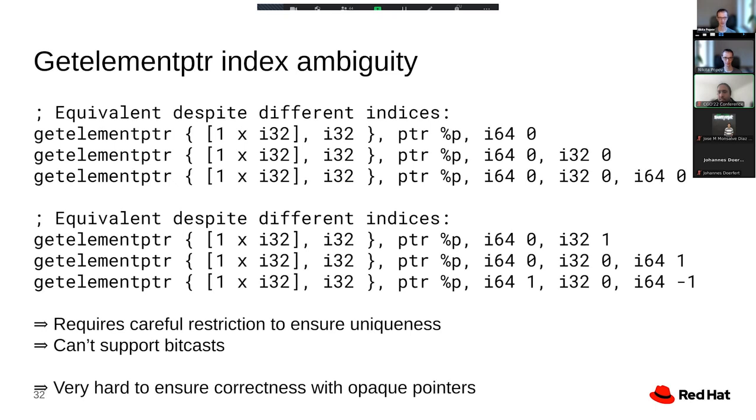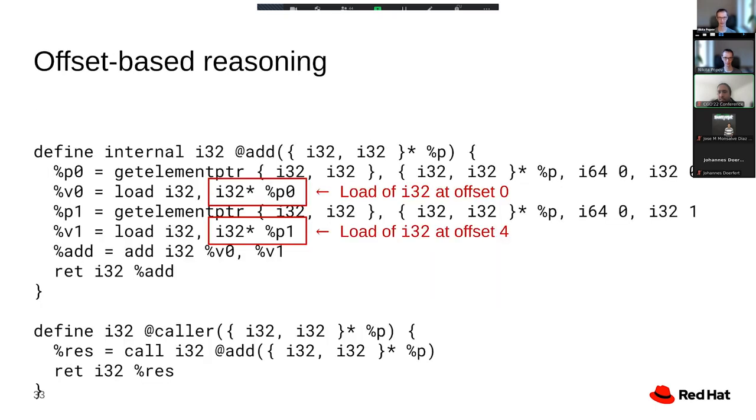What optimizations should be doing instead and what we did for various optimizations when migrating to opaque pointers is to look at offsets. In this example, we see that first we have one load of an i32 at offset zero and then another one at offset four. So what we're doing is we are deriving the effective struct type from the actual access pattern inside the function, instead of relying on type information that has been encoded in the IR.